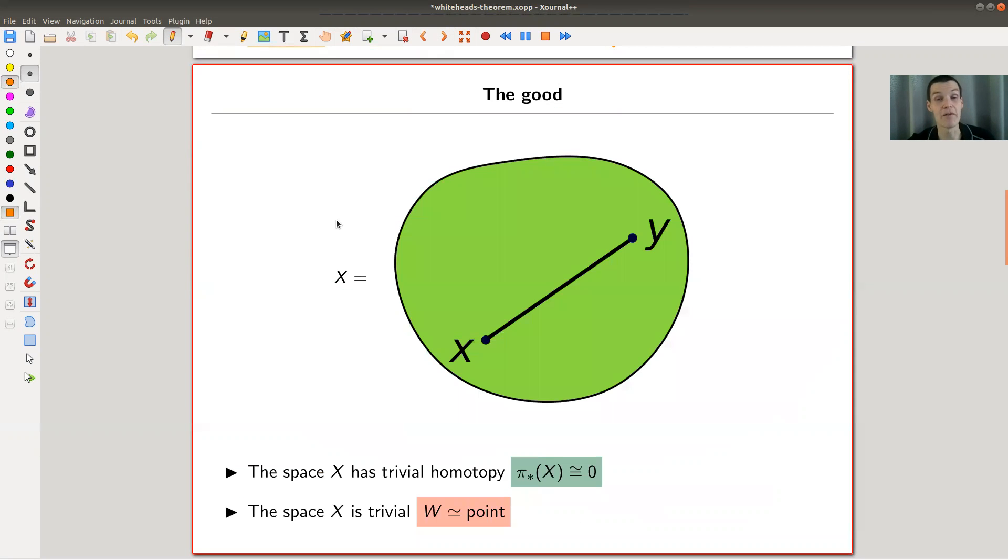So let's have an example. So I have three examples. The good, the bad, and the ugly. So let's start with the good. No intention. So the bad or the ugly are still very okay spaces. I just decided to go with the good, the bad, and the ugly because that's very famous. Anyway, so here's my first example.